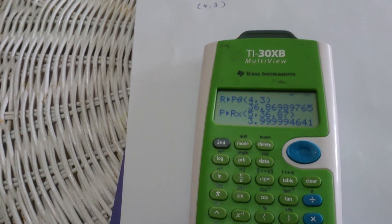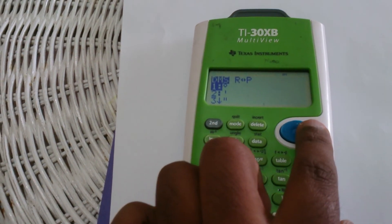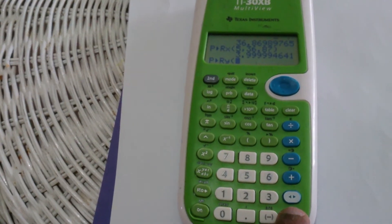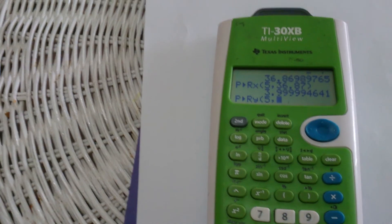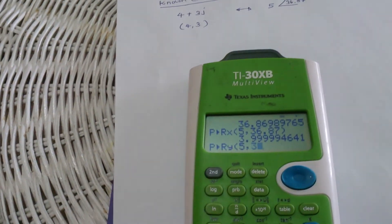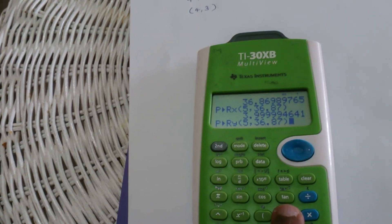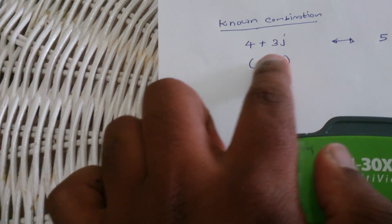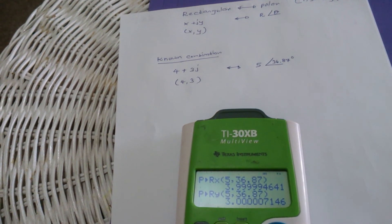To find the Y value, press Second, PRB, R to P, then select the fourth option and press Enter. Add the R value of 5, then Second and dot, then the angle 36.87 degrees. Close the parenthesis and hit Enter. You get 3, which matches the original Y value. Now you know how to convert between polar and rectangular forms.